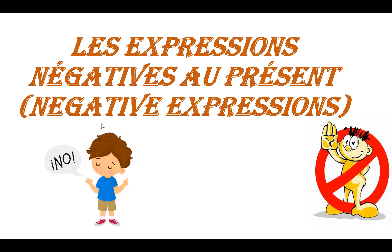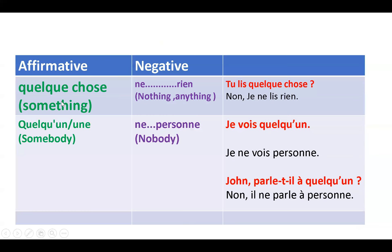In the present tense, when we have 'quelque chose' (something) in an affirmative sentence, we convert it to negation using 'ne...rien' (nothing/anything). For example, 'tu lis quelque chose?' — are you reading something? The negation is: 'non, je ne lis rien' — no, I'm not reading anything. We never use 'pas' here; 'rien' is invariable and comes after the verb.